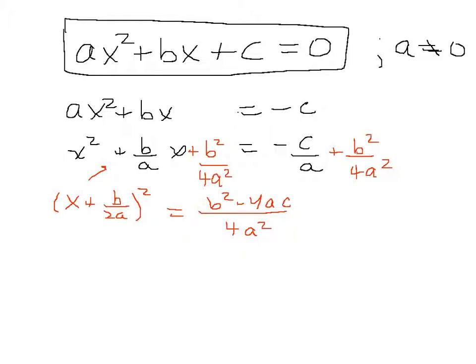Then I take the square root of both sides. And I get x plus b over 2a equals plus or minus the square root of b squared minus 4ac all over 2a.